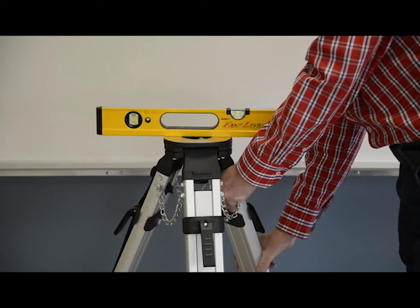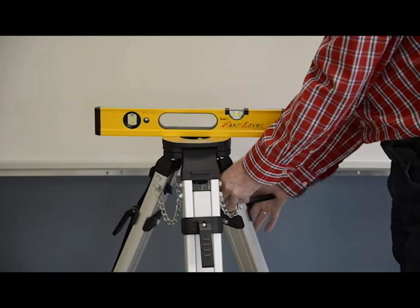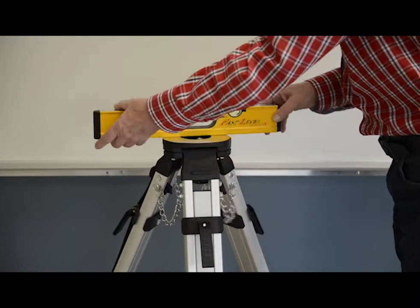Set up the tripod 100 feet or 30 meters from a wall, making sure the tripod head is leveled using a carpenter's level.